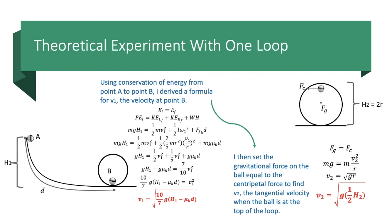For the theoretical experiment with one loop, I used conservation of energy again, starting with: potential energy initial equals kinetic energy linear final plus kinetic energy rotational final plus the waste heat from point A to point B. I derived a formula for the first velocity, which was the square root of 10 over 7 times g times h1 minus μk times the distance. Then I set gravitational force equal to centripetal force when the ball is at the top of the loop, and calculated a formula for the tangential velocity at that point.